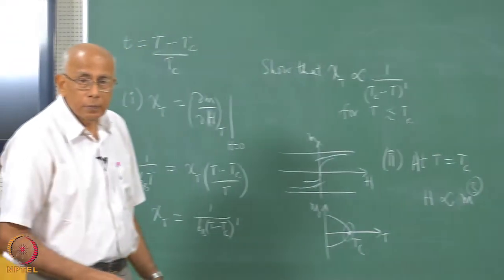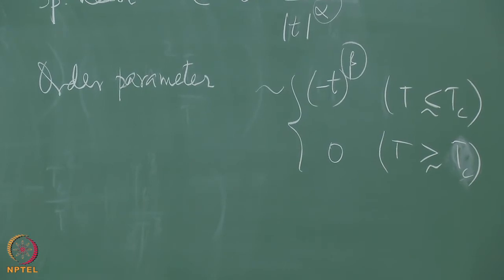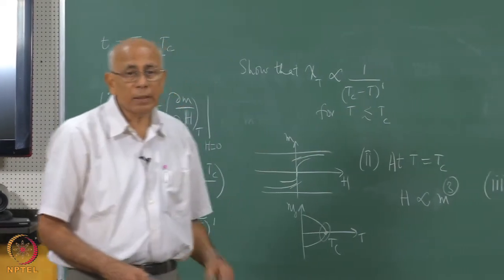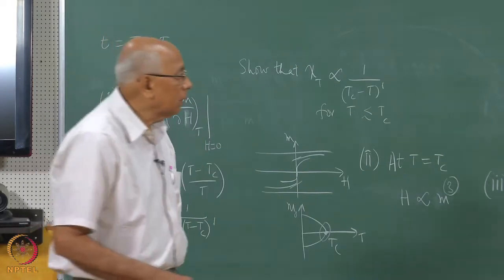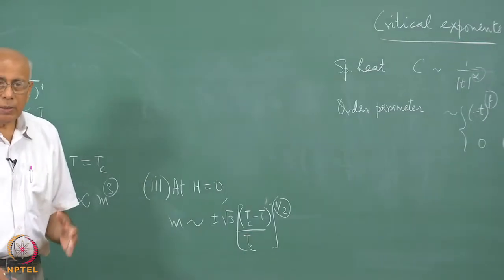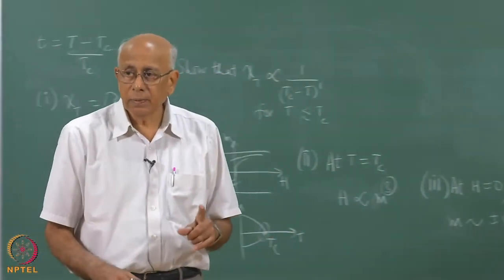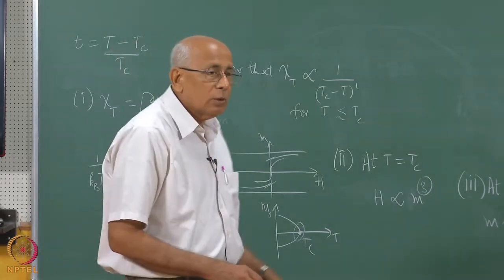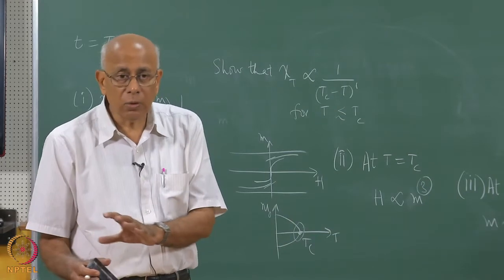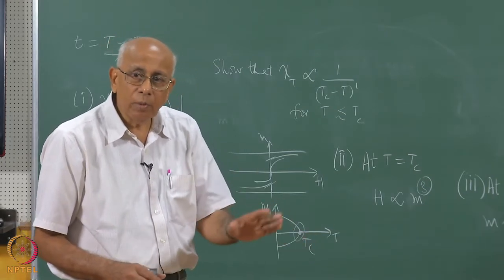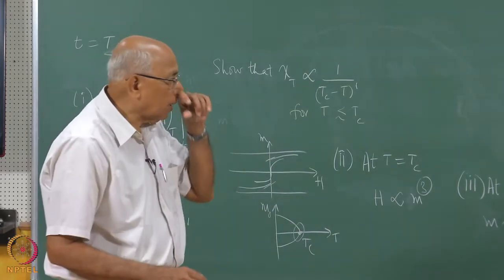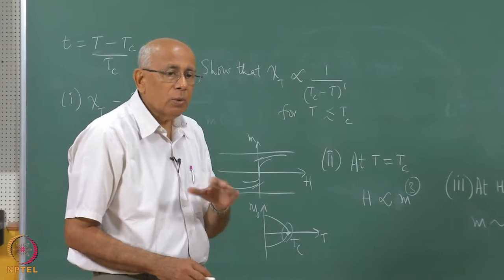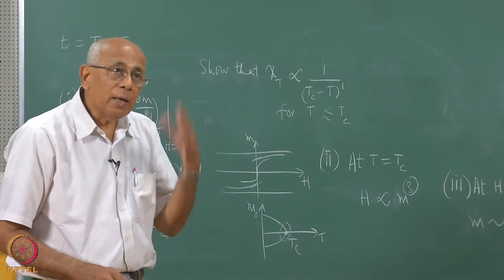For a gas the order parameter could be the density difference. There is no uniqueness about an order parameter; for magnetization you could use M³ or M⁷, but the simplest choice is conventional. The order parameter need not be a scalar: in the Heisenberg class the magnetization is a vector; in the XY model magnetic moments can only move in a plane giving a two-dimensional vector; in the Ising model spins point only up or down, so it is a scalar.